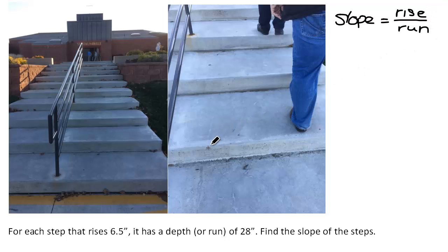When we look at this particular example, the staircase is difficult to walk up using one step at a time because it is a very deep staircase. The rise of each step is 6.5 inches, and the run of each step is 28 inches deep. So if we want to calculate the slope, we write it as the rise over the run.